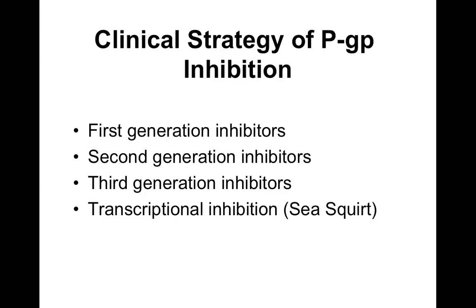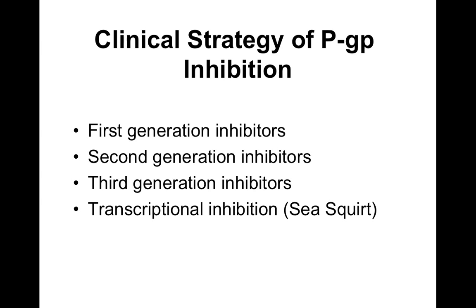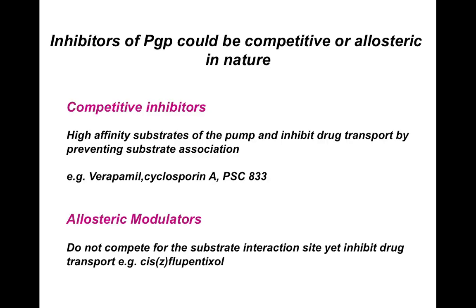Different kinds of inhibitors were developed to inhibit the functioning of P-glycoprotein. These fall into two major classes: competitive inhibitors and allosteric modulators. Competitive inhibitors are high-affinity substrates of the pump and inhibit drug transport by preventing substrate association — meaning they prevent the substrate from binding to the pump because they have higher affinity than the substrate. The pump is kept busy pumping out these competitive inhibitors, so it cannot pump out the anti-cancer drug and the anti-cancer drug remains inside the cell.